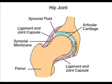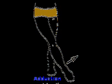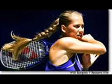Ball and socket joints, such as in the hip and shoulder, allow a whole range of movements including flexion, extension, rotation, and abduction and adduction — which is the taking away and adding to the body of a limb. For instance, lifting your arm up at the side when playing a tennis shot.